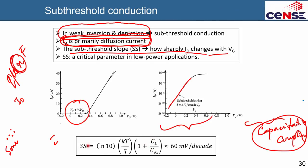Here, kT/q is the thermal energy (approximately 0.026 eV at room temperature), CD is the depletion capacitance, and Cox is the oxide capacitance. You want this quantity to be as low as possible for a sharper transistor on/off response. The best case is when CD/Cox is much less than 1, making the bracketed term approach 1.